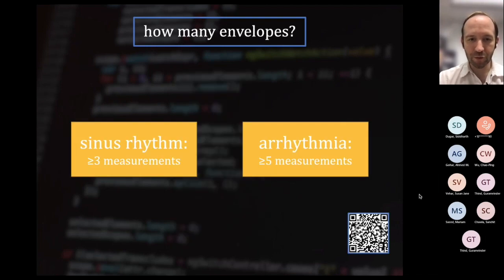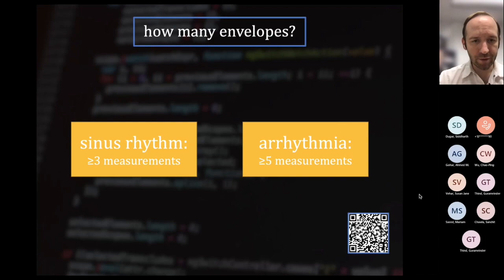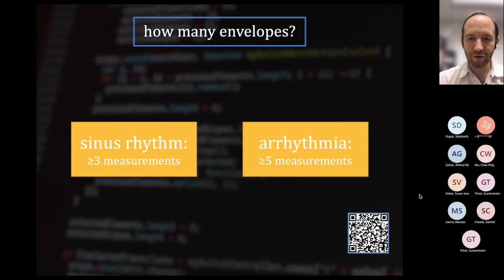Should you just measure one envelope? No. If it's sinus rhythm, you should measure at least three envelopes and then average those together. If there's an arrhythmia, at least five — as many as 10. So in a patient with atrial fibrillation, this would be very laborious.